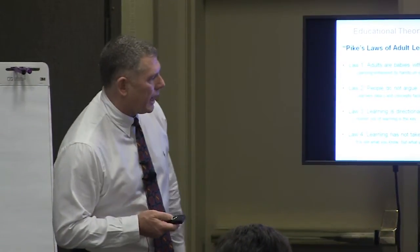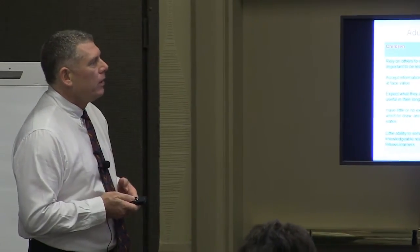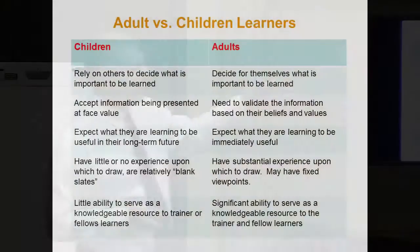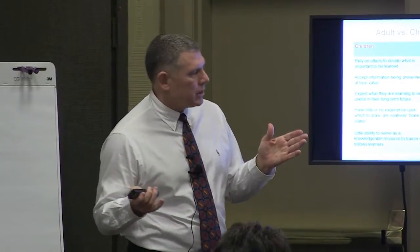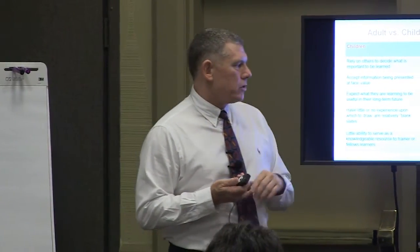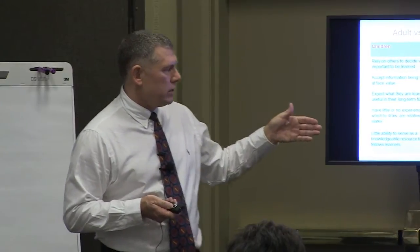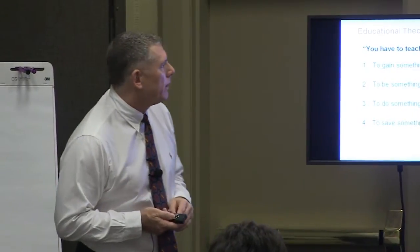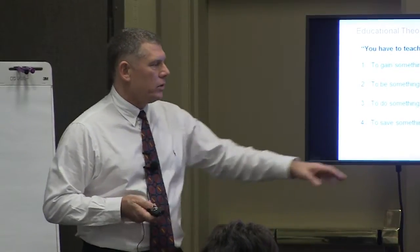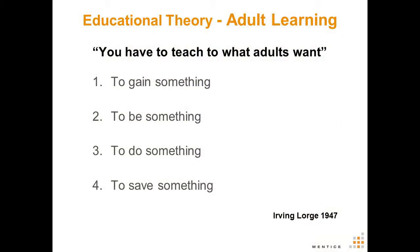Law four: learning won't take place unless behavior changes — it's not what you know but what you do that counts. Adults versus children: children rely on others to decide what's important; adults decide for themselves. Children accept information at face value; adults base it on their belief system. Adults have substantial experience to draw on and may have fixed viewpoints.